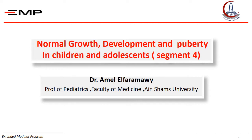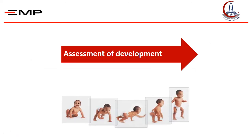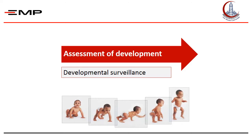Let's now start assessment of development, which we defined earlier as the progressive acquisition of various skills and the ability to function independently. The various skills that babies and young children learn are called milestones. Assessment of development can be performed by developmental surveillance, which is an informal process comparing skill levels of the child elicited by observation to lists of milestones.